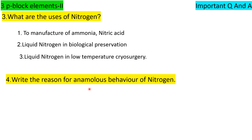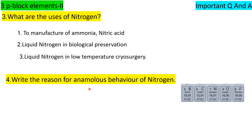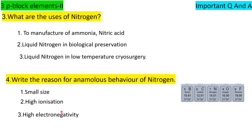Write the reason for the anomalous behavior of nitrogen. Like boron, carbon, oxygen, and fluorine, the first element of the group shows anomalous behavior. The reasons are: first, small size; second, high ionization energy; third, high electronegativity; fourth, absence of d-orbital in the valence shell.